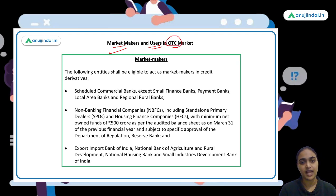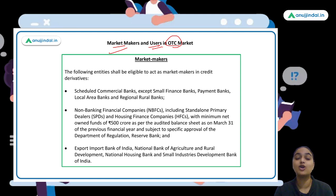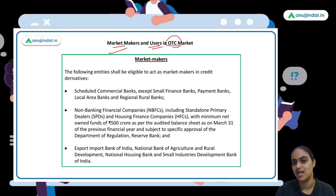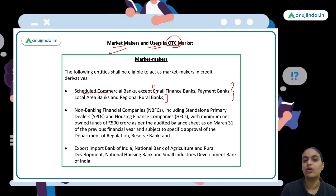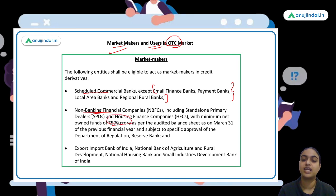Who can be market makers in the OTC market? Scheduled commercial banks — except small finance banks, payment banks, local area banks, and regional rural banks — can act as market makers. NBFCs can also act as market makers, including certain housing finance companies and standalone primary dealers with a net worth of 500 crores. Additionally, the Export Import Bank of India, NABARD, National Housing Bank, and SIDBI are also eligible to act as market makers.